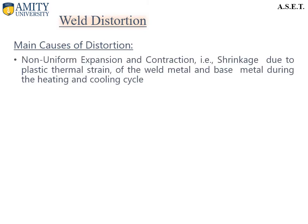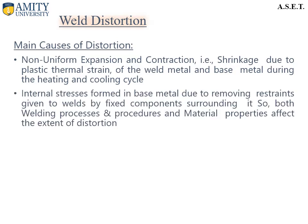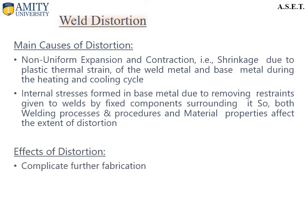The main causes are: non-uniform expansion and contraction, that is shrinkage due to plastic thermal strain of the weld metal and base metal during the heating and cooling cycle; and internal stresses formed in the base metal due to removing restraints given to the weld by the fixed components surrounding it. Both welding processes, procedures, and material properties affect the extent of distortion.